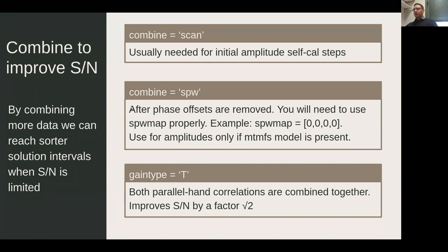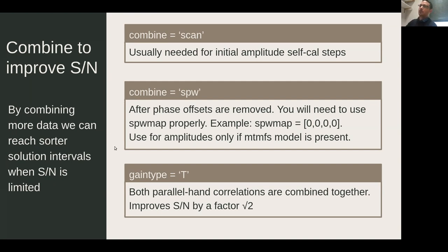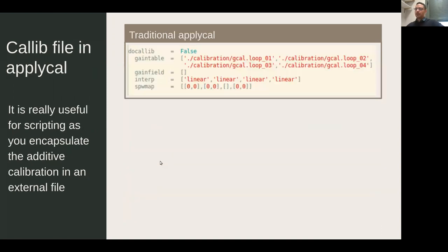If combining spectral windows for amplitudes, make sure you have a very good model with spectral index included — you need to use multi-frequency synthesis (MT-MFS, nterms=2) so your model accounts for spectral shape. There is also a mode in gaincal that allows combining parallel-hand correlations (e.g., RR and LL), giving a signal-to-noise improvement of a factor of square root of two.